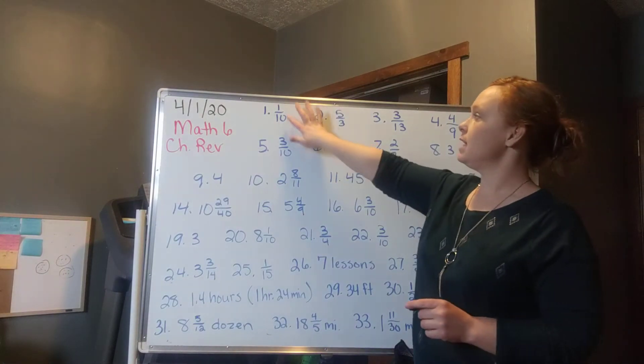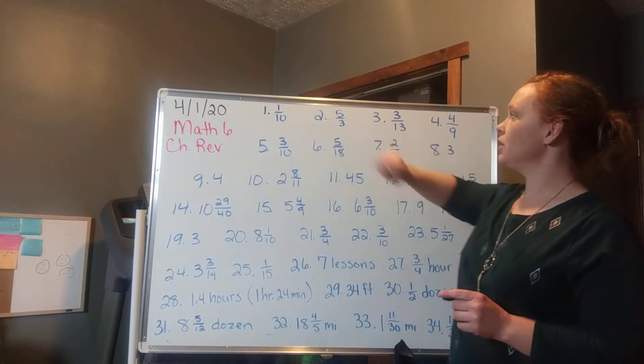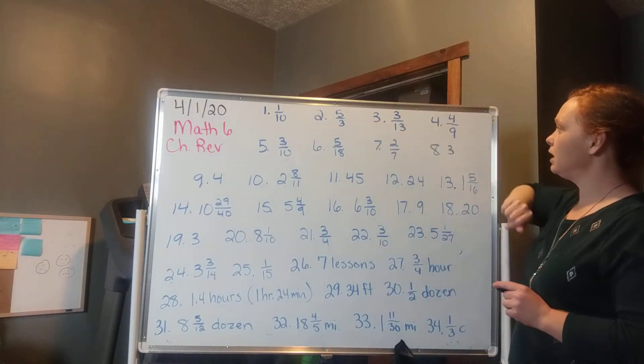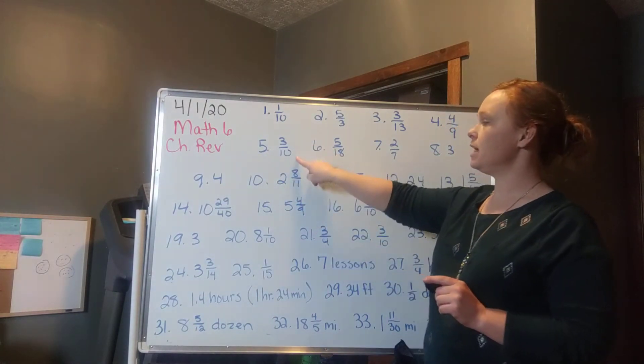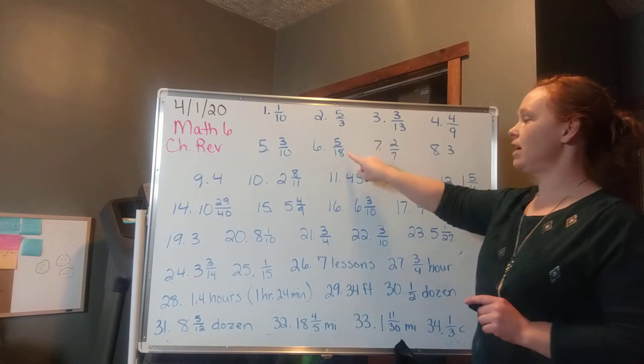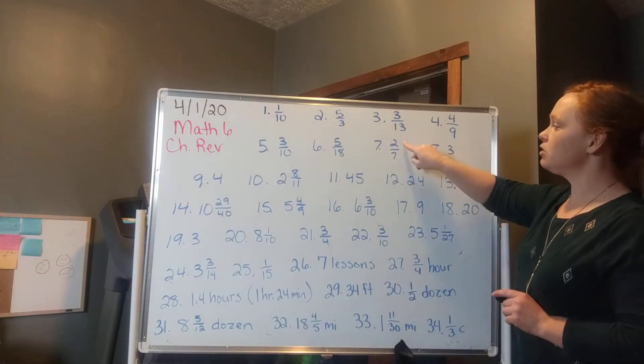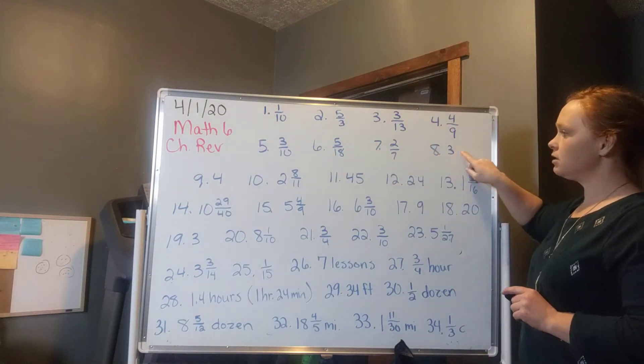Number 1 is 1 tenth. Number 2 is 5 thirds. Number 3 is 3 thirteenths. Number 4 is 4 ninths. Number 5 is 3 tenths. Number 6 is 5 eighteenths. Number 7 is 2 sevenths. Number 8 is 3.